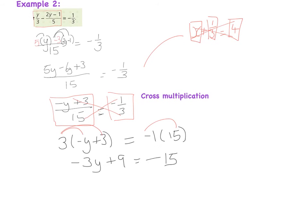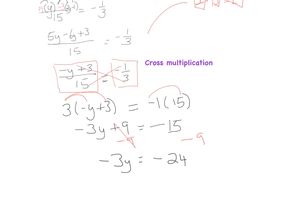Now balance to find y. I want y on one side and everything else on the other. First, get rid of plus 9 by subtracting 9 from both sides — they cancel — leaving minus 3y equals minus 15 minus 9, which is minus 24.